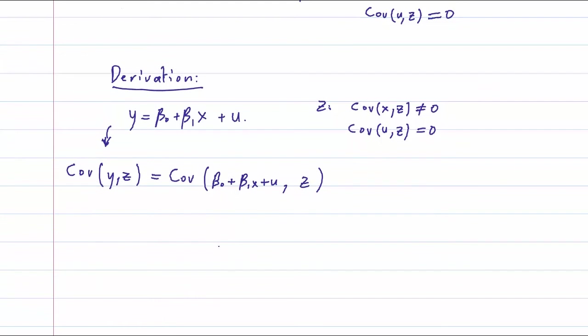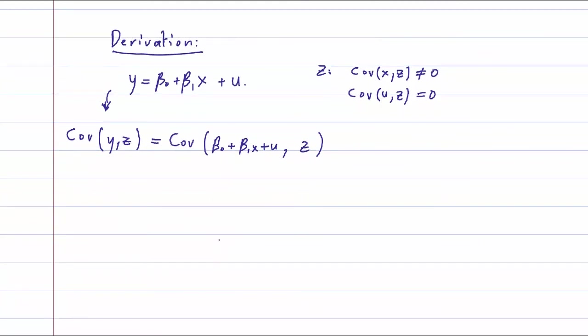I'm going to apply some rules concerning the covariance to split this. So we have the covariance between beta zero and z plus the covariance between beta one x and z plus the covariance between u and z.